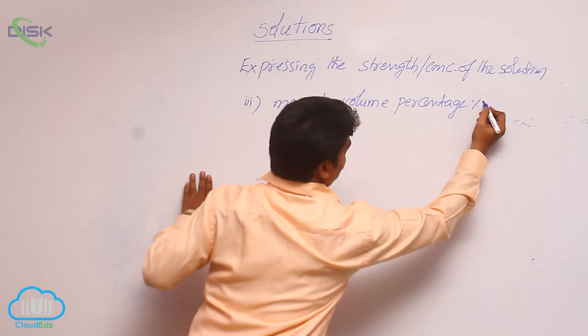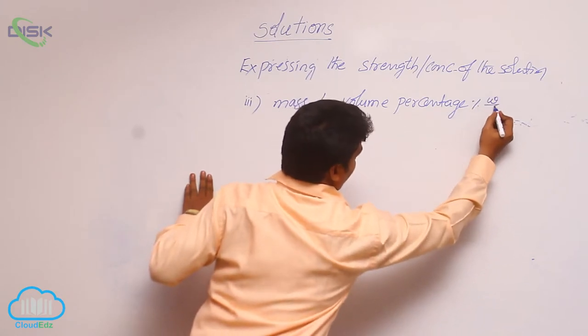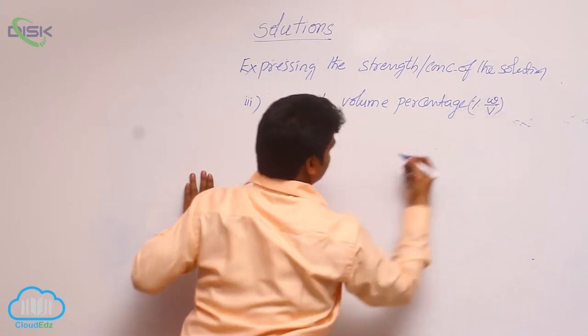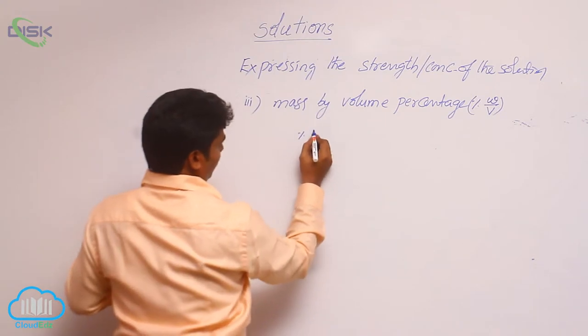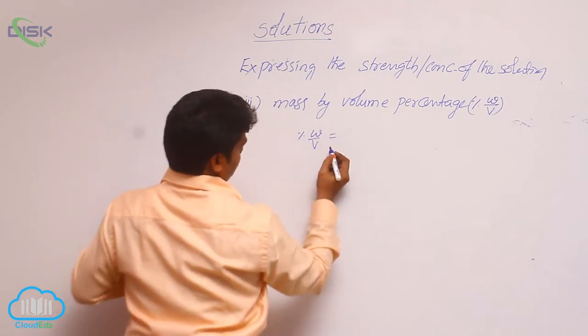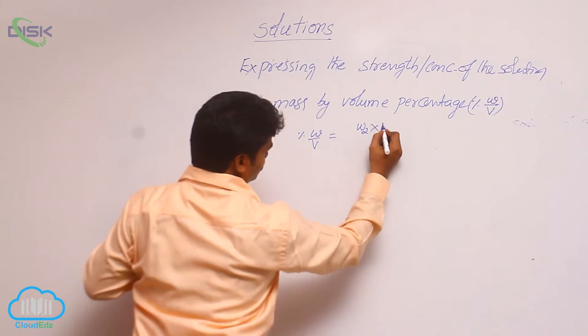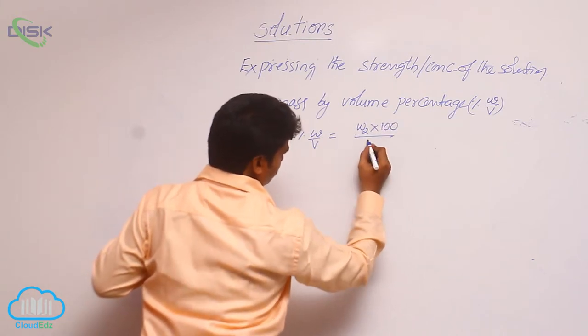Mass by volume percentage. In this, it is denoted by small w by capital V. See its formula. It is W2 into 100 by V.